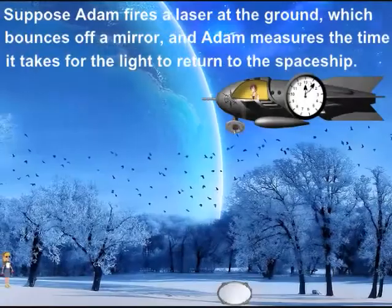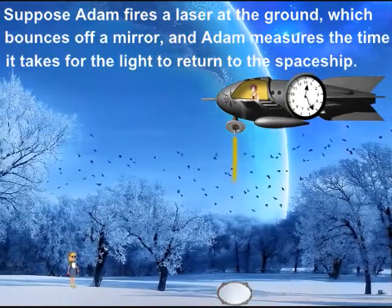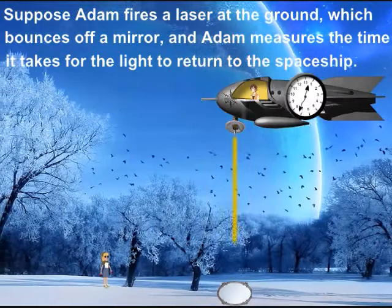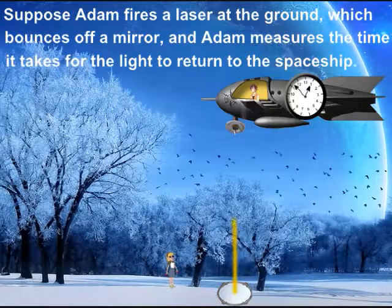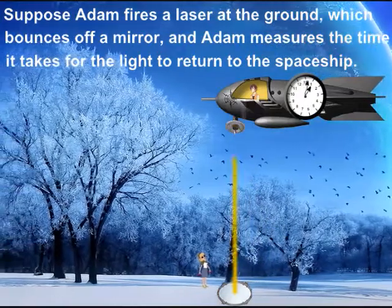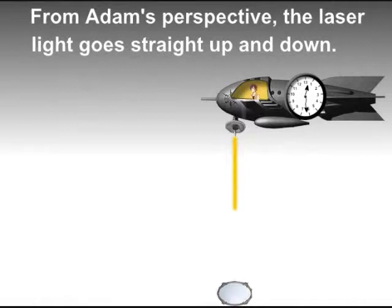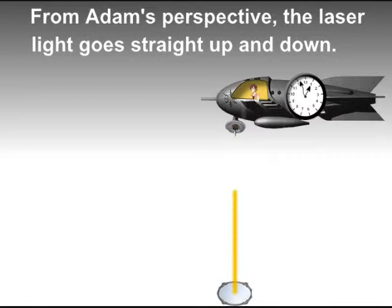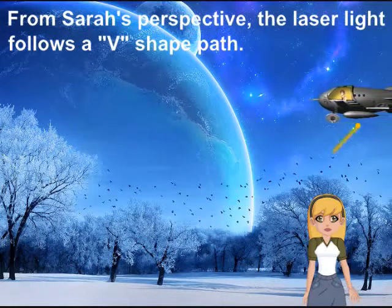Suppose Adam fires a laser at the ground, which bounces off a mirror, and he measures the time it takes for the light to return to the spaceship. From Adam's perspective, the laser light goes straight up and down. From Sarah's perspective, the laser light follows a V-shaped path.